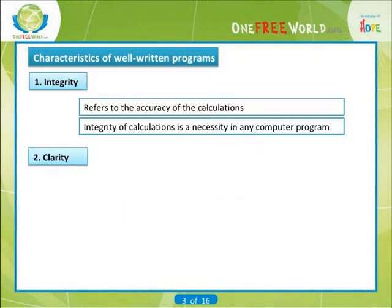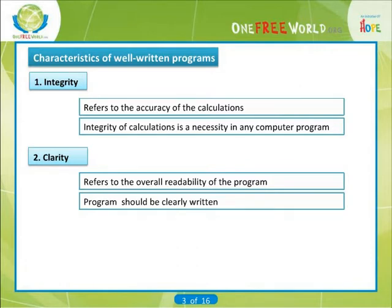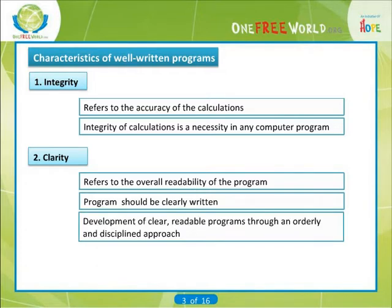Clarity. It refers to the overall readability of the program with particular emphasis on its underlying logic. If a program is clearly written, it should be possible for another programmer to follow the program logic without undue effort. It should also be possible for the original author to follow his or her own program after being away from the program for an extended period of time. One of the objectives in the design of C is the development of clear, readable programs through an orderly and disciplined approach to programming.